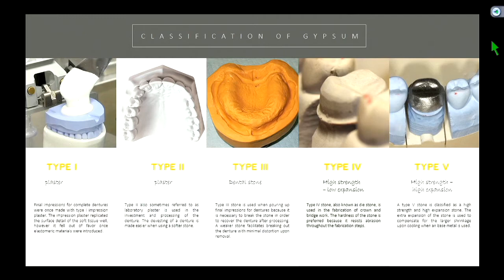Type 1 is generally used as a mounting plaster — that's what we use it for, to mount our casts onto the articulator. Previously it was also used for complete denture impressions, but that's not common now. Type 2 is used when processing dentures, but isn't used a whole lot in our clinic.